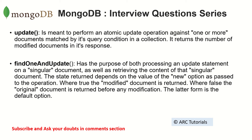If the modification flag was false, it will return you the original document. So that's the main difference between update and findOneAndUpdate. Two important things to mention: update will update more than one document matching the condition, whereas findOneAndUpdate will update only one document.